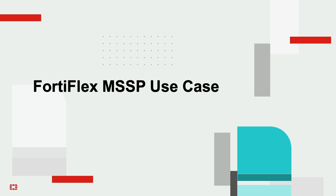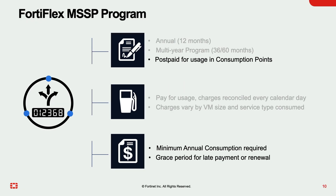MSSPs are constantly challenged by the need to select the right size VM and services for their deployments. Many times, the size of VM and the type of service varies with customer choice, use case, and cloud platform limitations. The use of classical perpetual subscription licensing creates a size black hole which can lead to over-provisioning waste, or even worse, under-provisioning, which increases the risk of exposure.